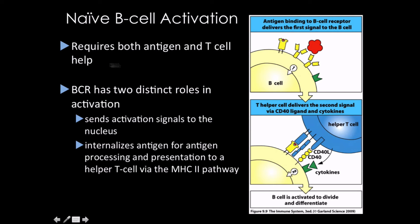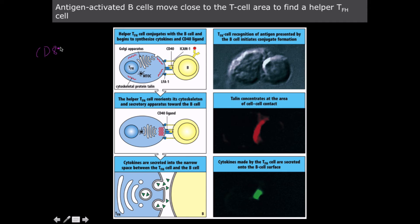Naive B-cell activation requires both antigen and T-cell help. The B-cell receptor has two distinct roles: it sends the activation signal to the nucleus via the signal transduction pathway, and B-cells undergo receptor-mediated endocytosis and processing for MHC type 2 presentation, which activates the helper T-cell. We have an LFA-ICAM interaction holding the cells in close proximity, MHC type 2 interaction, and the CD40 receptor. Once it recognizes the peptide-MHC complex on the B-cell, the T-cell secretes cytokines including CD40 ligand, interleukin-4, and interleukin-10.